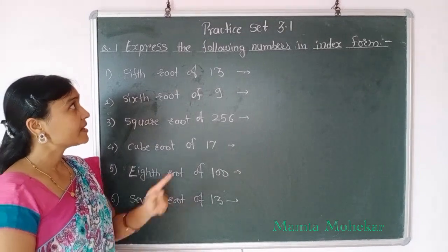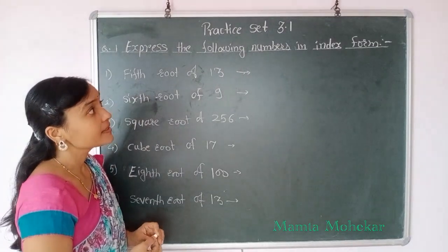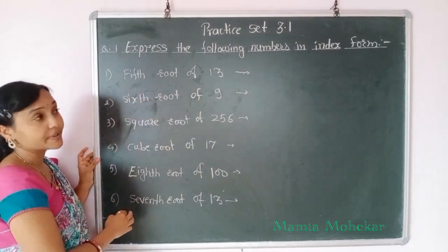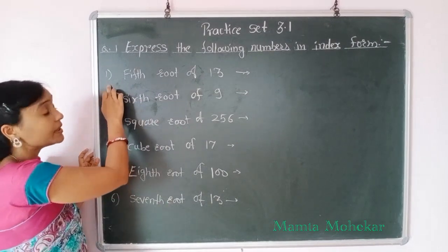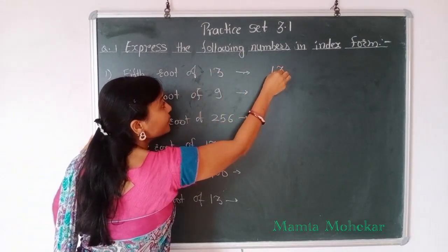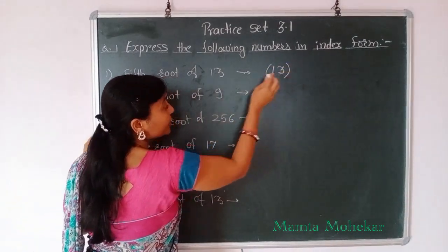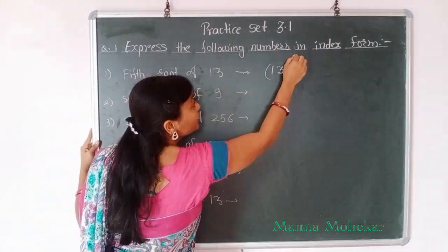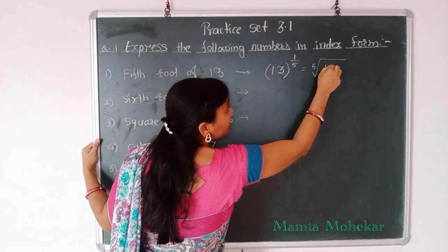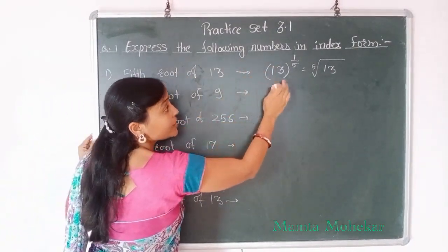Now let's start Practice set 3.1, question number 1: Express the following numbers in index form. First example: fifth root of 13. Fifth root means index is 1 upon 5, so we write 13 to the power 1 upon 5. We could also write it using a radical sign, but since the question asks for index form, we write this form only. Second example: sixth root of 9, so we write 9 to the power 1 upon 6.